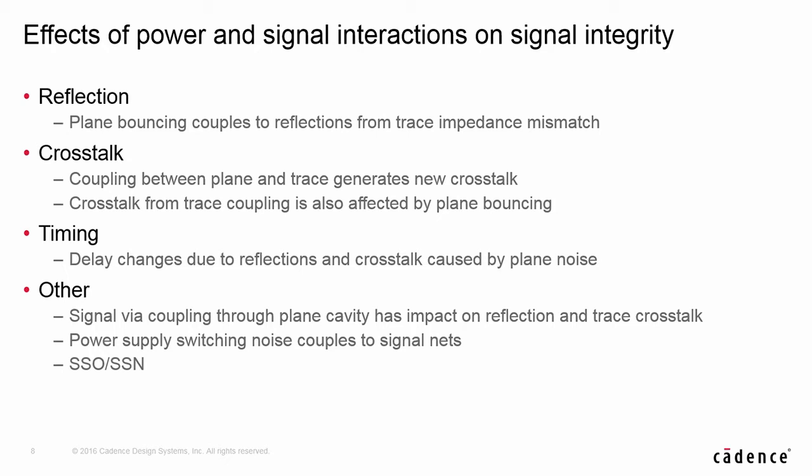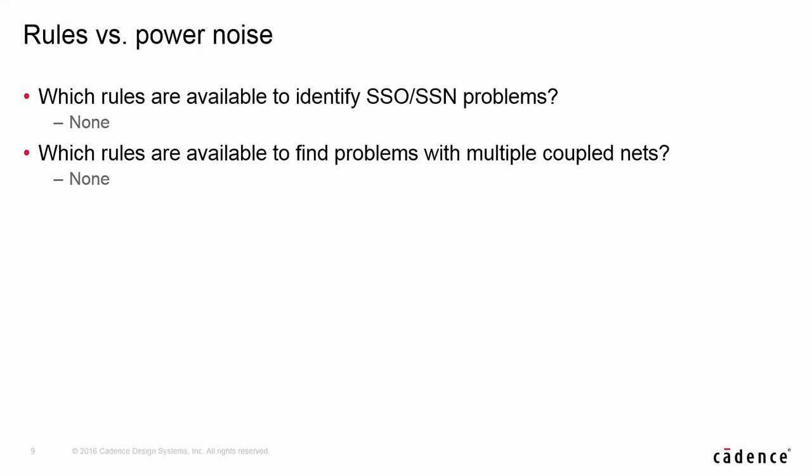First, we need to understand that power noise couples to the signals and will change all classic SI problems such as reflection, crosstalk, and timing. SSN and power supply switching are typical examples. The next question is: is there any rule available to check the power-induced problems in a design? The answer is no, because the plane noise impact on signals is difficult to model and may not be easy to get any simplified formula to derive rules for practical use.